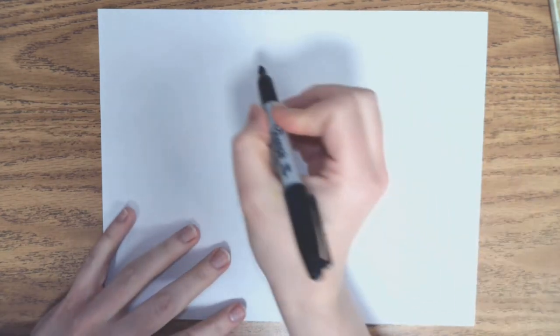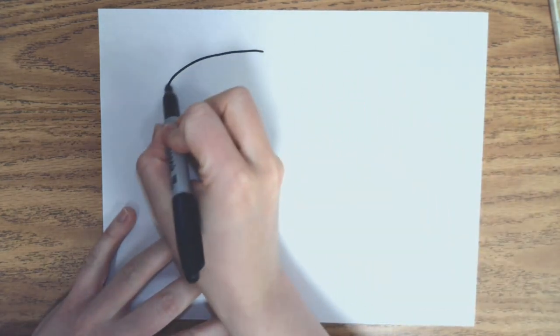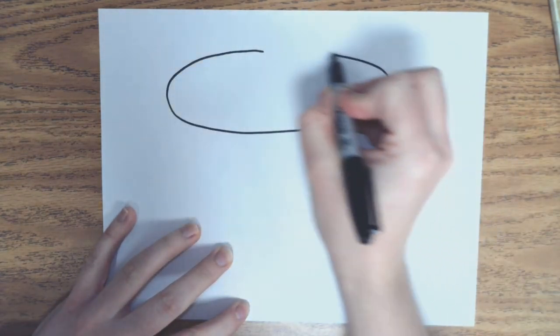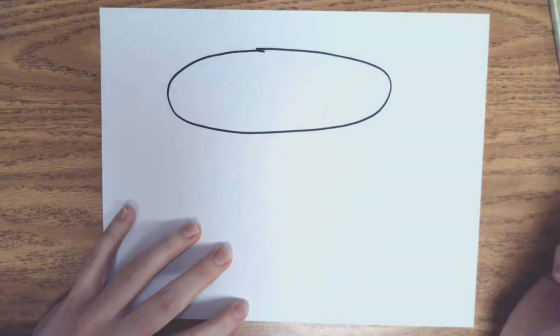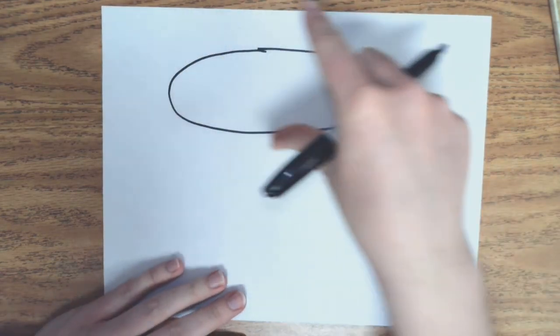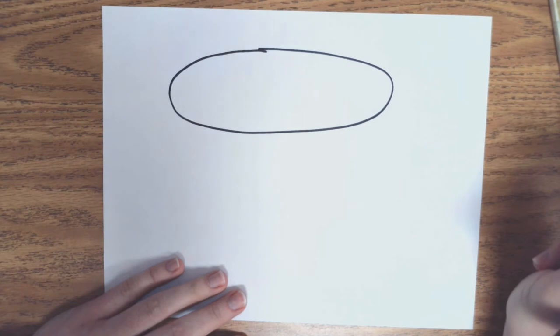So the first thing to our drawing is going to be the hoop. We're going to start with an oval. And it's not a very fat oval, but it is long. It takes up most of our picture.